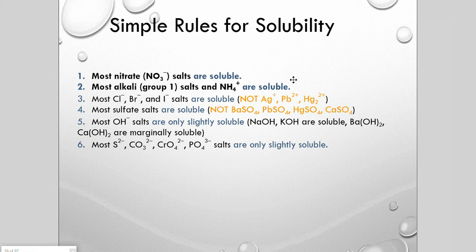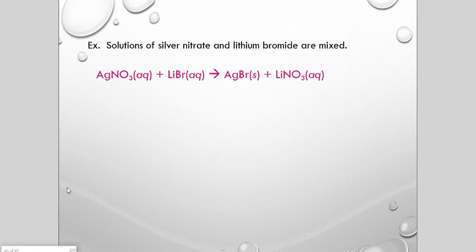The solubility rules: the first two are mission critical — nitrates, alkali metals, and ammonium salts are almost always soluble. The rest contain exceptions, but they give us a tool to separate solutions of mixed ions. For example, an aqueous solution of silver nitrate and lithium bromide put in the same container produces a solid precipitate — silver bromide — which settles to the bottom as it falls out of solution.